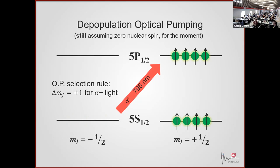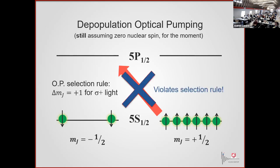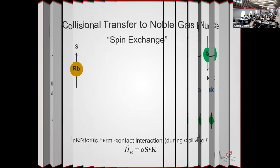These excited states collisionally mix, so it doesn't really matter — they can fall back to either state with equal probability. Otherwise you'd need to worry about Clebsch-Gordon coefficients. But the point is, if I'm continually driving this transition, I'm continually depopulating this state. These atoms then violate the selection rule for this light, so I'm only driving these transitions, and there's no sub-level I can pump into going the other way. So the atoms get stuck, and I have an ensemble of polarized alkaline metal atoms.